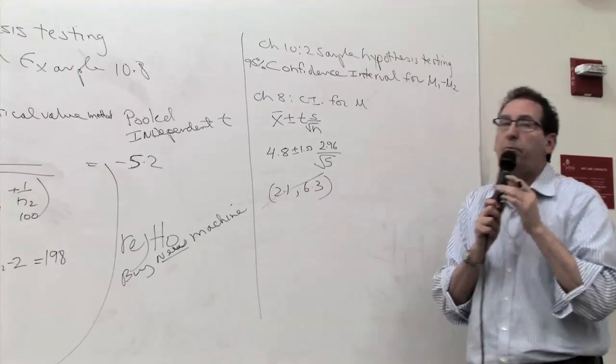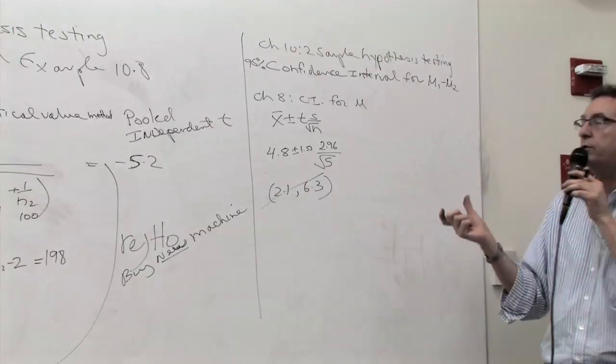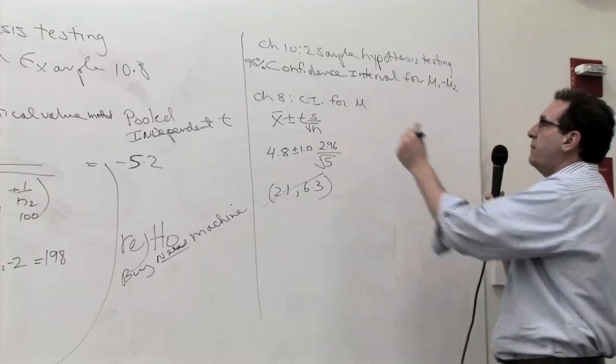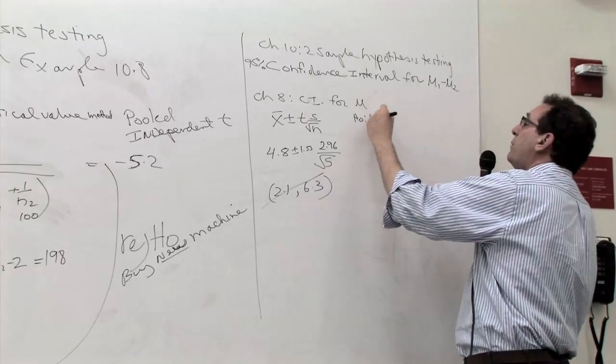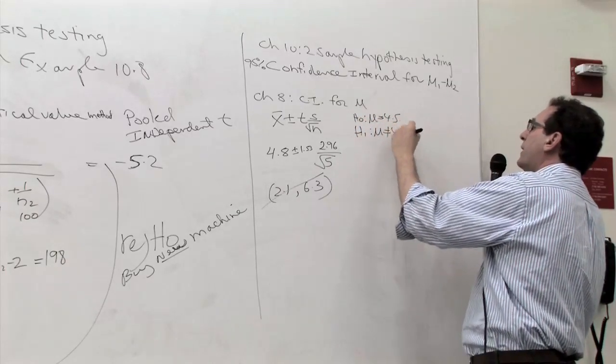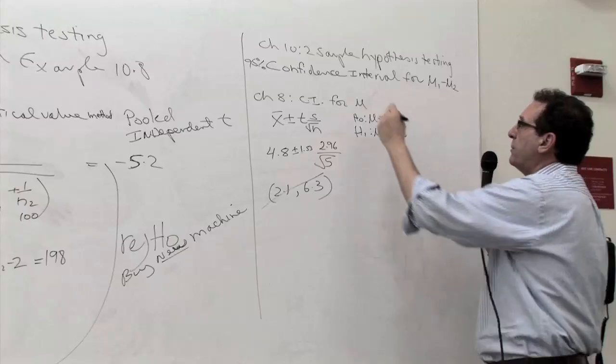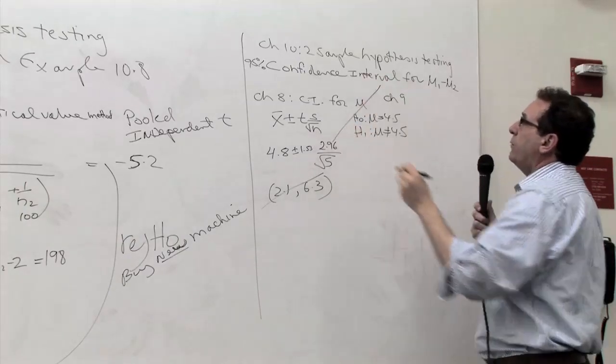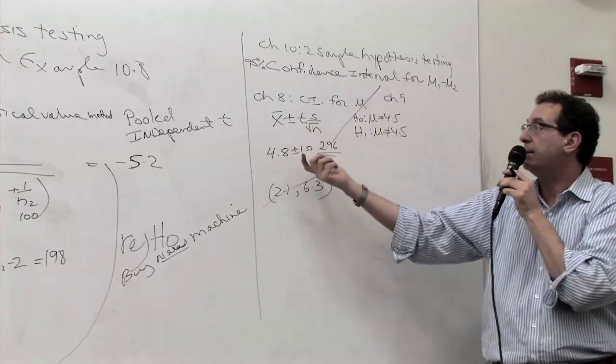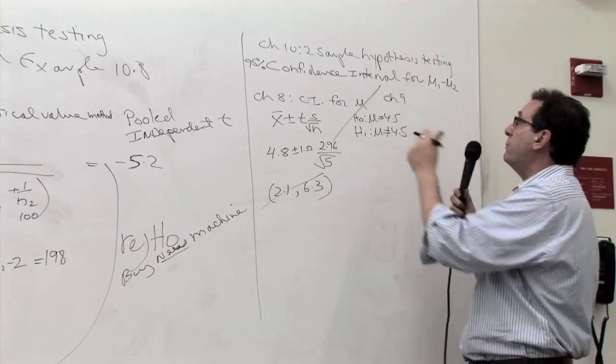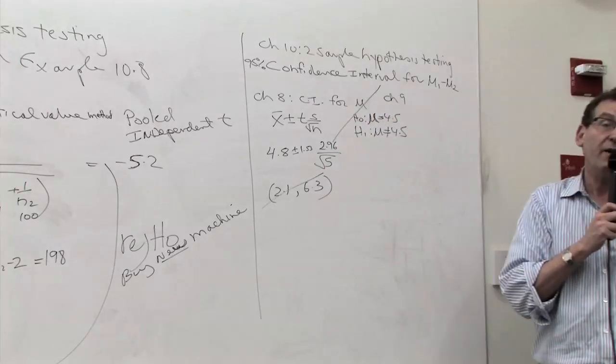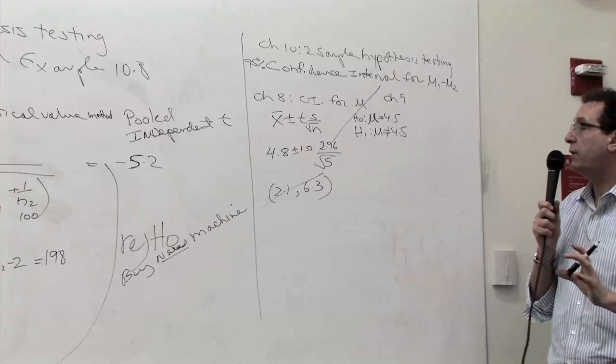I'm 80% confident that μ is somewhere between those two numbers. Very often you want to report not just is it significantly different. The other thing we did in Chapter 9 is H₀: μ = 4.5, H₁: μ ≠ 4.5. One approach is to do it by hypothesis testing. The other approach is to estimate the μ. Both of them are talking about the μ. Here you're trying to get a yes or no answer, but here you want to know, in fact there's more information if it's in between two different numbers.